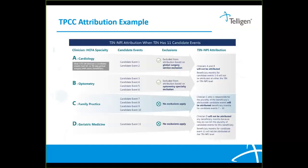Here is an example of how the attribution will work for the TPCC measure. In this example, the patient will be attributed to Clinician C because they are responsible for the plurality of the candidate events and are not one of the excluded specialties. There are 56 excluded specialties that fall into the following broad categories: surgical subspecialties, non-physicians without chronic care management, internal medicine subspecialties without additional highly procedural subspecialization, internal medicine specialties that practice primarily inpatient care without chronic care management, and pediatricians who do not typically practice adult medicine. As you can see, cardiology and optometry in examples A and B fall into these exclusion categories, so the patient will not be attributed to them. The patient will also not be attributed to Clinician D because they do not bill the plurality of the candidate events.